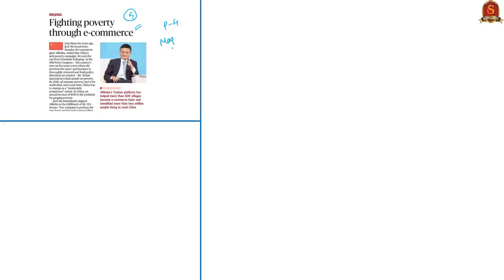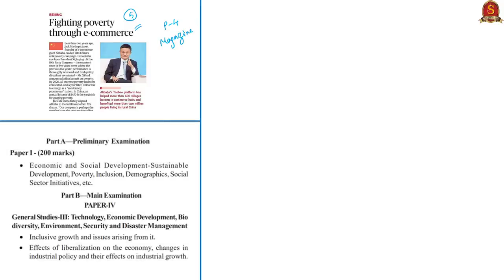The fifth article is 'Fighting Poverty Through E-Commerce,' appearing in page 4 of the magazine section in all four editions. This will be helpful in prelims preparation under Economic Development, Sustainable Development, Poverty and Inclusion, and for mains preparation in General Studies Paper 3 under inclusive growth and effects of liberalization on the economy, and also in the essay paper.